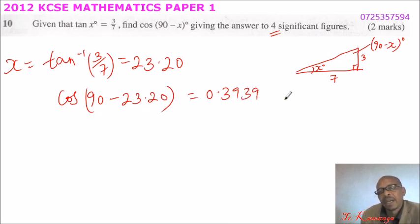3941, and because we are working to four significant figures, the final answer is 0.3939. So the cosine of angle 90 minus x equals 0.3939, and you will be able to get two marks for this question.